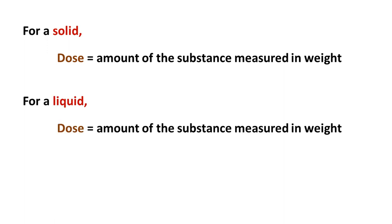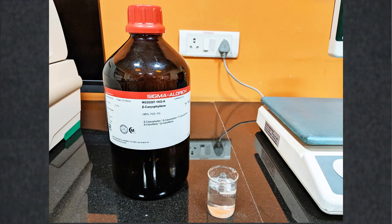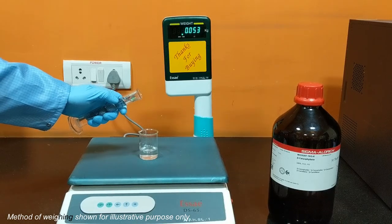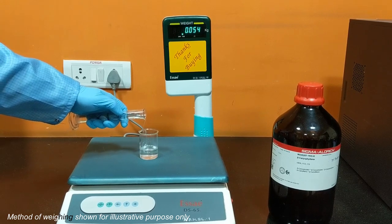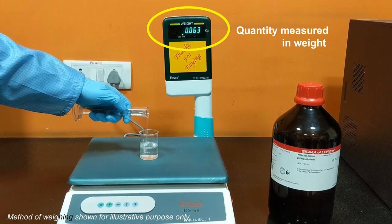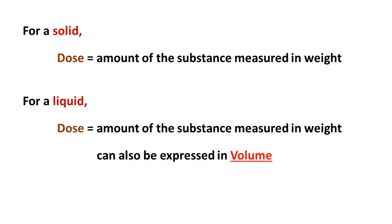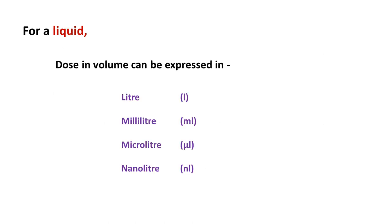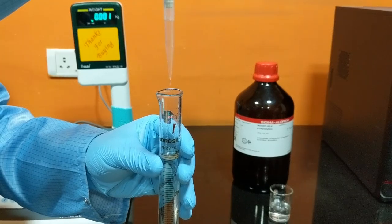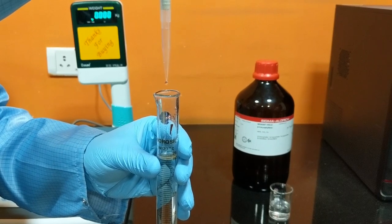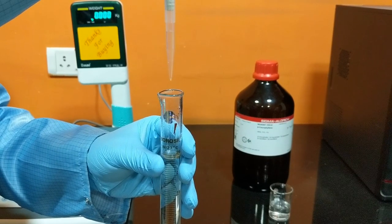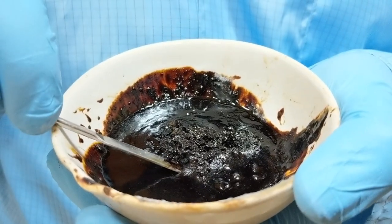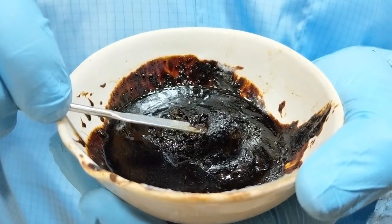Now, what if the substance is a liquid? If the substance is a liquid, dose can still be expressed in terms of its weight. This is beta-caryophyllene, a natural sesquiterpene that exists as a liquid. Beta-caryophyllene can be weighed using a balance and its dose can be expressed in weight like milligrams or grams. The dose of a liquid can also be expressed in volume like milliliters, microliters, or nanoliters, measured using a graduated cylinder or pipette. Plant extracts which are sticky and semi-solid can also be weighed and the dose expressed in weight.